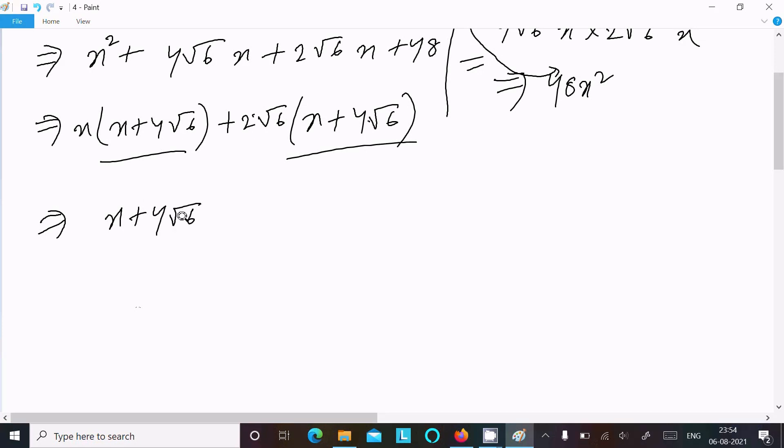Now (x + 2√6) comes here. So this is the factorization of this equation.